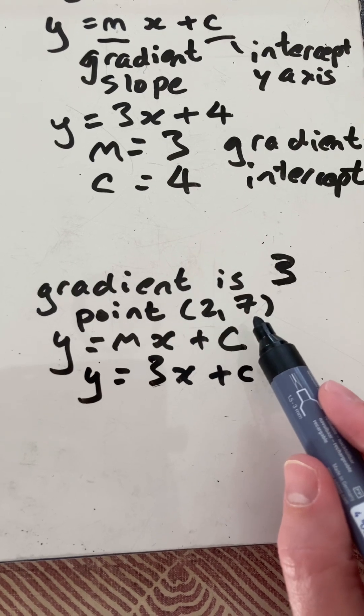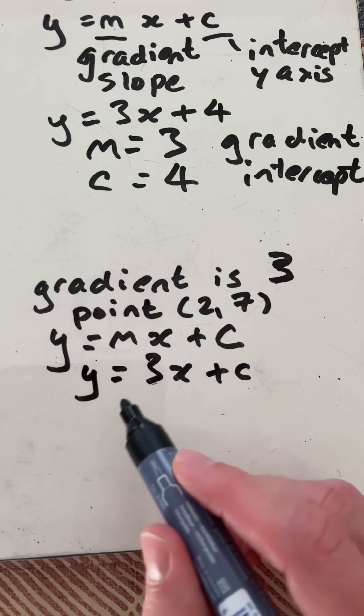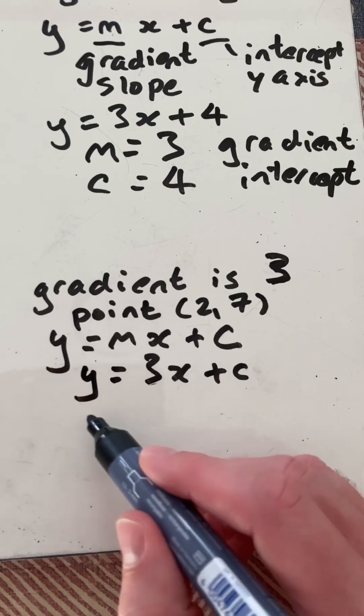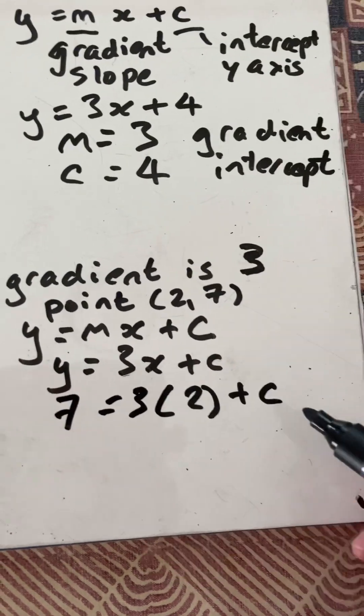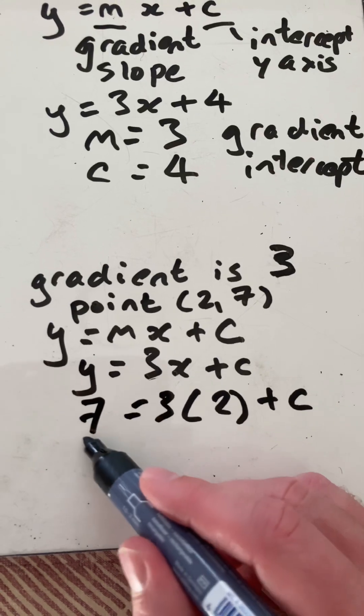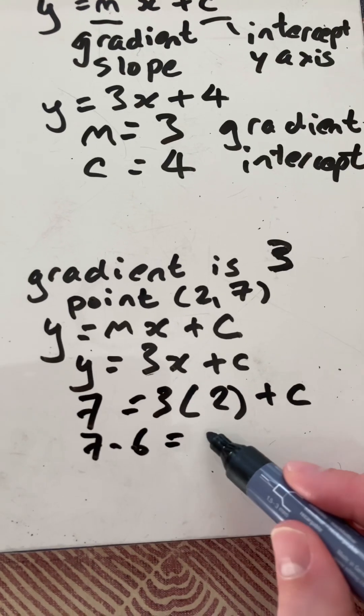Now we can use substitution to solve for c. So I'm going to replace y with 7 and x with 2. Now solving for c, it's 7 minus 6 equals c.